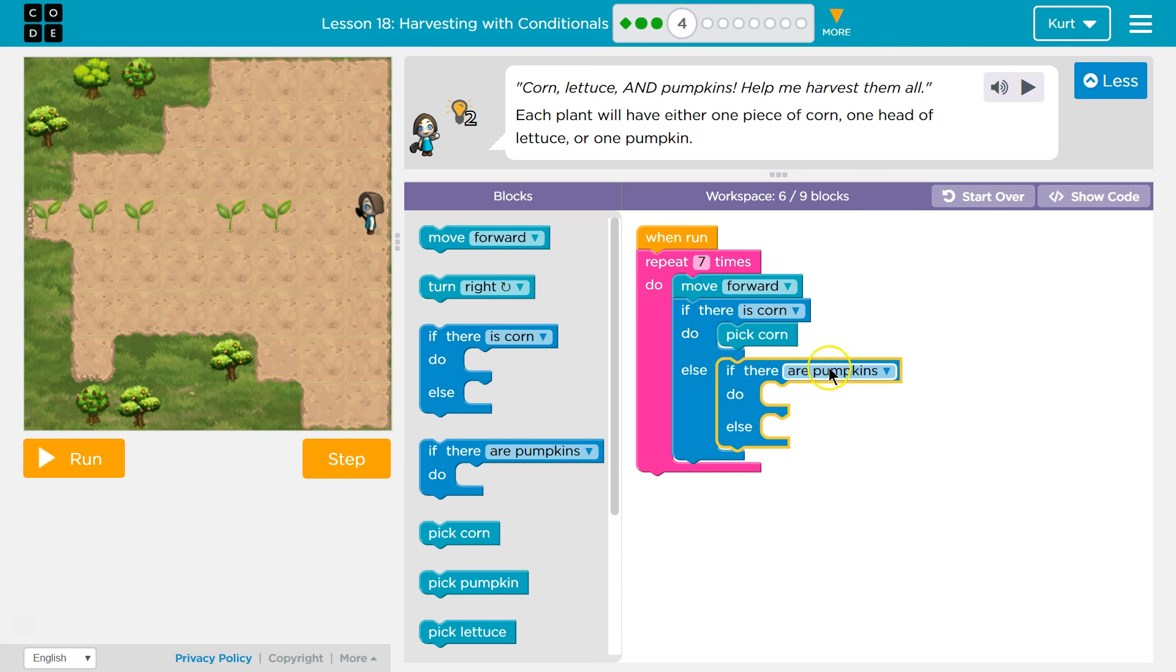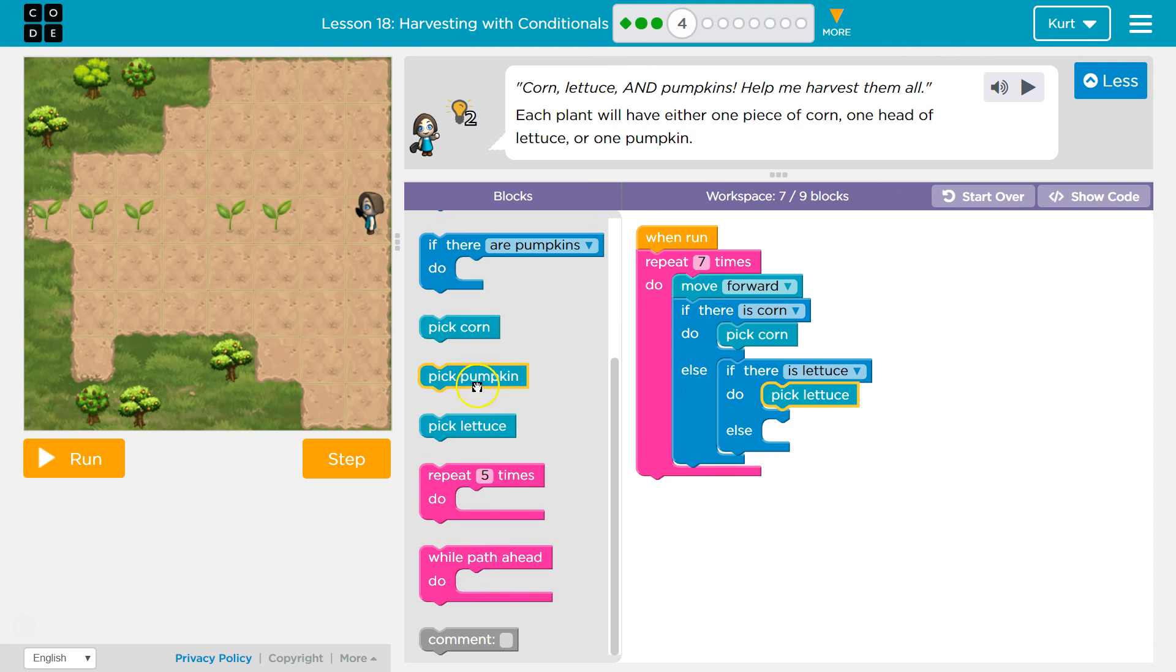Okay, sure. If there are pumpkins, right, or lettuce, either way. So, if there's lettuce, what would I do? I would pick lettuce, and then by default, what would I do? Pick a pumpkin. Accept, accept, accept.